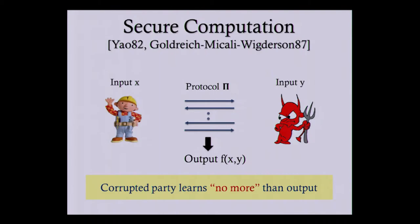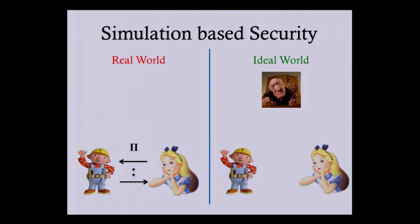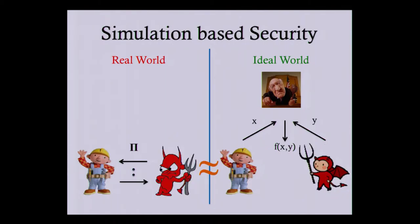This notion of not learning anything more than the output is captured by a real-world, ideal-world simulation-based definition, which says that in the ideal world the parties do not talk to each other, but instead there's a trusted party, and both parties send their input to this trusted party who computes the output and gives it to both parties. It is clear that in this model any corrupted party cannot learn anything beyond the output, and this is what we want to capture in the real world. So for any real-world adversary attacking the protocol, there exists a corresponding adversary in the ideal world which can launch the same attack. This adversary is called the simulator.